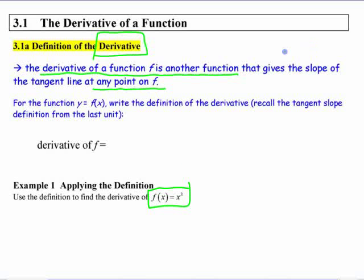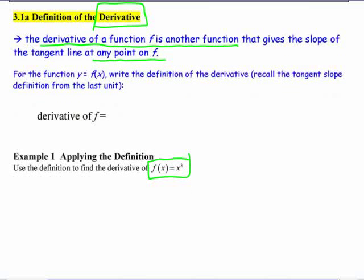The definition of the derivative is pretty much what we've had already: the limit as h approaches zero of the slope of the secant line. The slope of the secant line is just some point minus the other—the two y-values over h.